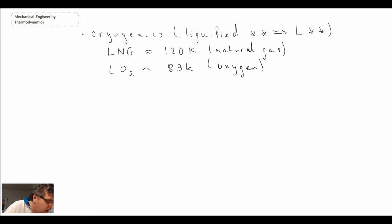Liquid oxygen, liquid nitrogen is around 77 kelvin. And then when you get to liquid hydrogen, it's around 20 kelvin, and finally liquid helium is around 4 kelvin.